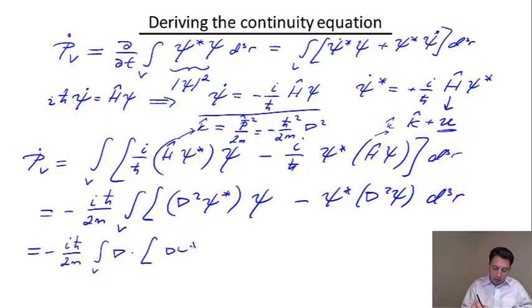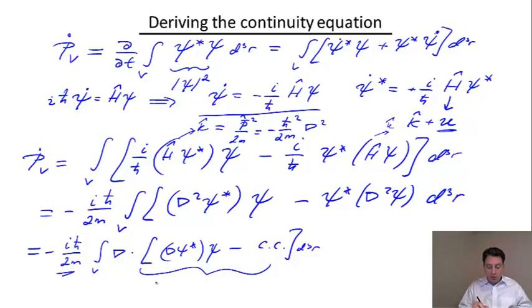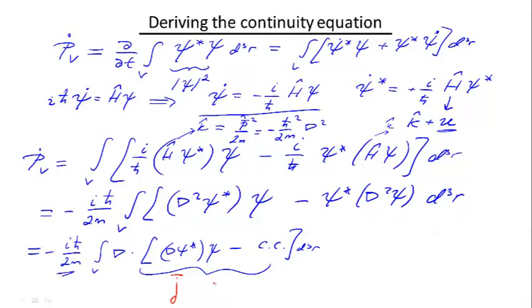of ∇Ψ* · Ψ minus complex conjugate to it. So, and this whole thing, well, times this coefficient, is exactly the current that we have been looking for, because again, we ended up with the full derivative of a vector integrated over the volume.